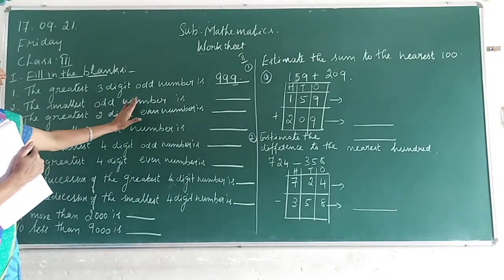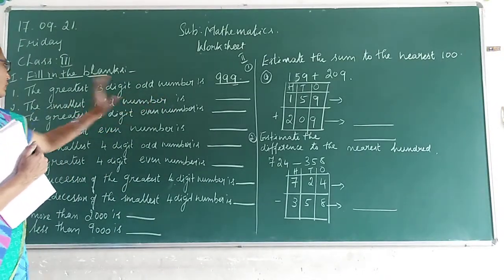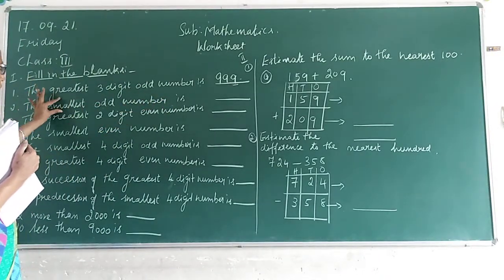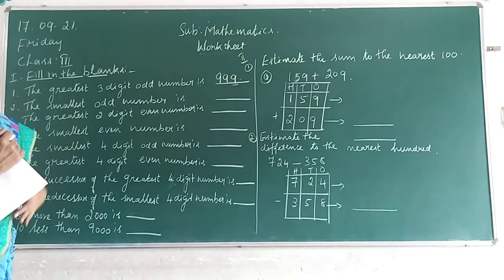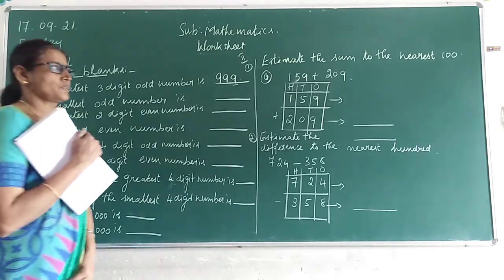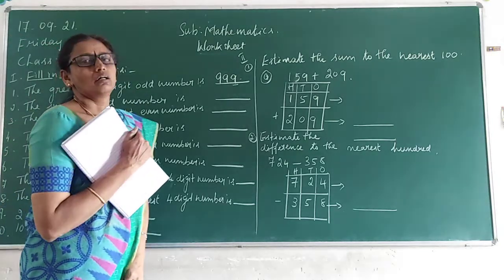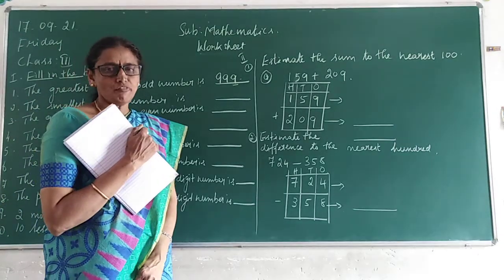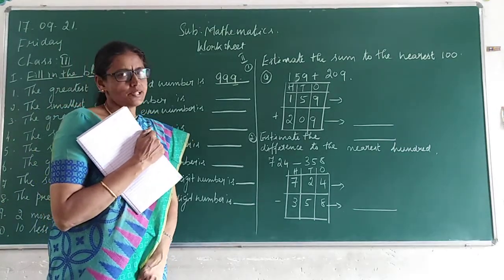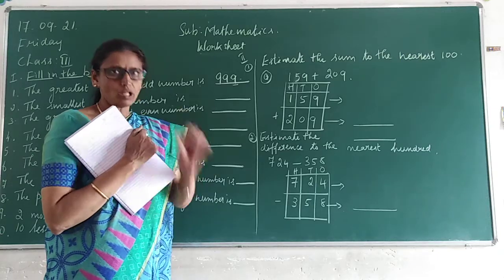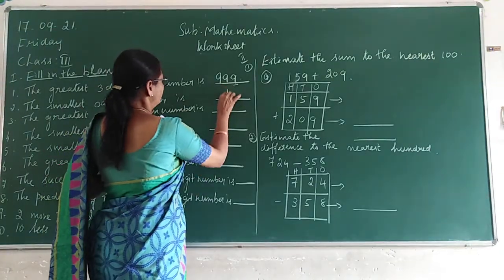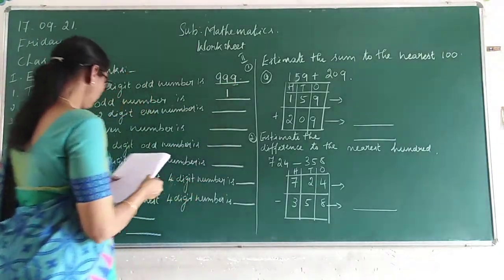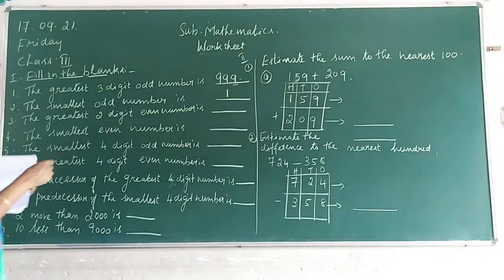Smallest odd number is dash. What is the smallest odd number? Odd numbers are 1, 3, 5, 7. Isn't it, children? So the smallest odd number is 1.